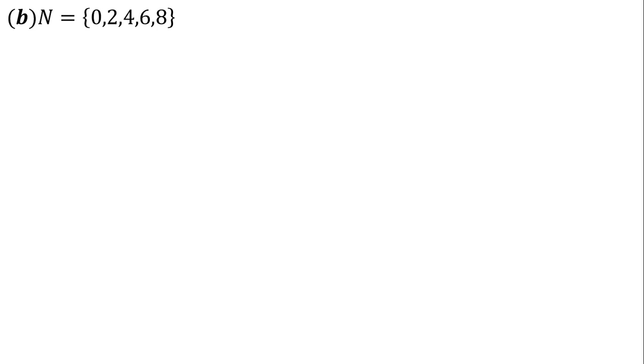In part B, N = {0, 2, 4, 6, 8}. These are also even numbers, but here the set is not continuous — it ends at 8. Counting the elements: 1, 2, 3, 4, and 5 — these are the first 5 even numbers. So N is the set of first 5 even numbers.